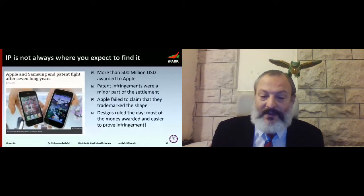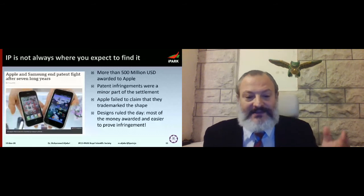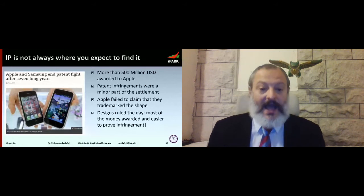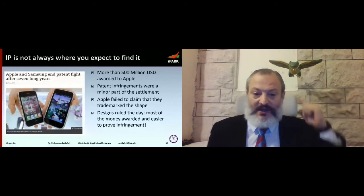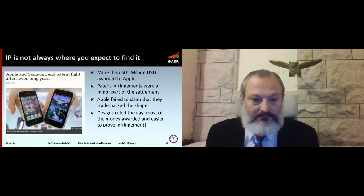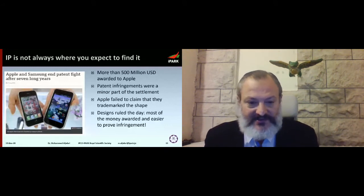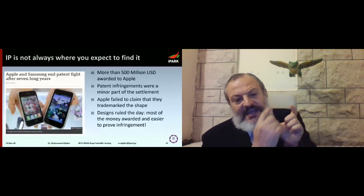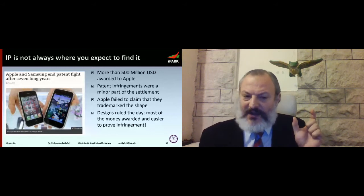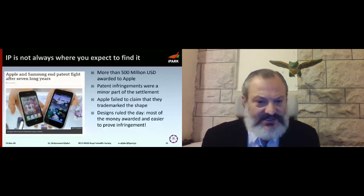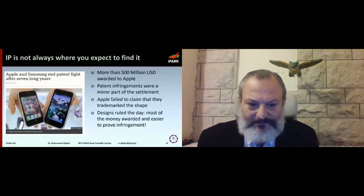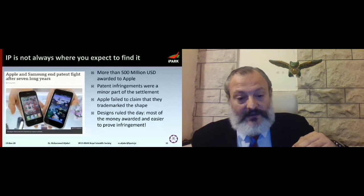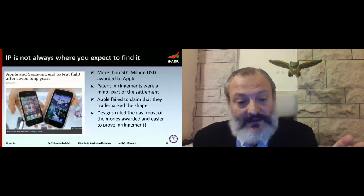Another very interesting example: the litigation between Apple and Samsung — more than $500 million awarded to Apple. Apple had patents and said Samsung was infringing on them. Apple also tried to trademark the shape of the iPhone, but the judge threw that out — saying no shape can be trademarked. The thing that sealed the deal was a design.